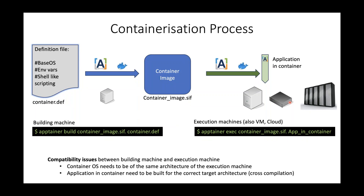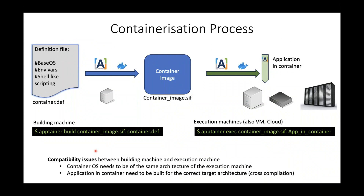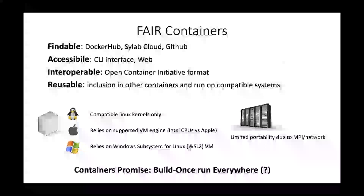If the target machine is a workstation, it's straightforward with no major drawbacks. The problem arises when you change machines and need to be aware of the target architecture. For example, if you build your container for an Intel CPU and the destination machine uses a Power or ARM architecture, it won't work. You need to create the correct combination. If you compile the application inside the container, you need to adopt cross-compilation strategies to build the correct binary for the target machine.